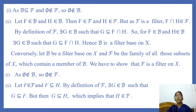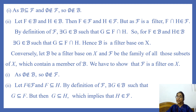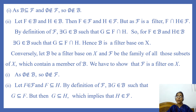Now we check the second condition. Let F belong to F and F be contained in H. We have to show that H is also a member of F. By definition of F, there exists some member G of B such that G is contained in F, because F is a superset of some member of B. Since G is contained in F and F is contained in H, G is contained in H. That means there exists a member G in B such that G is contained in H, so H is a superset of some member of B, which implies H belongs to F.